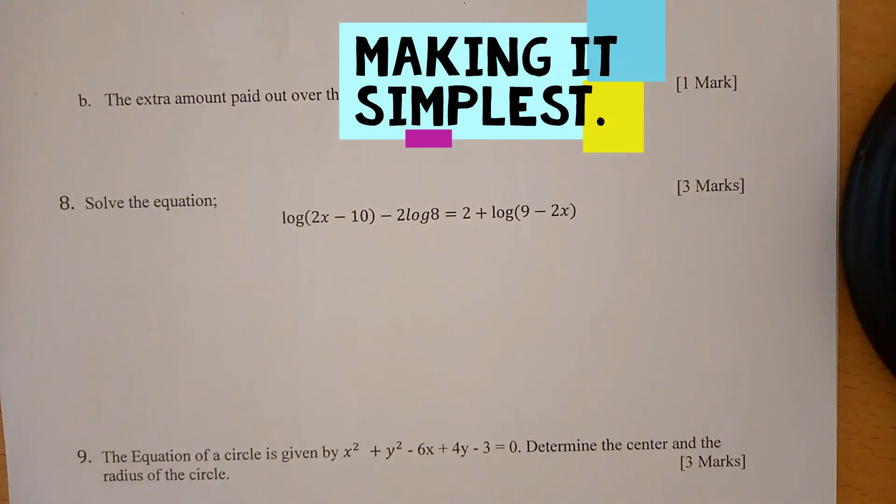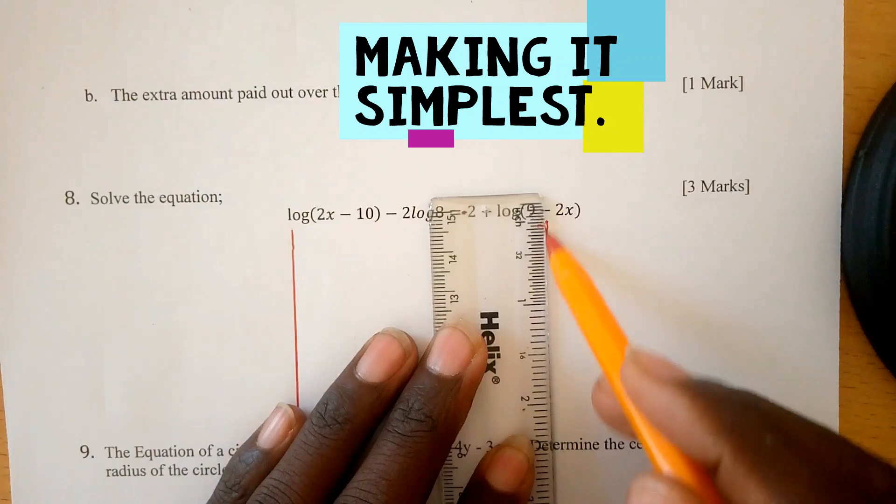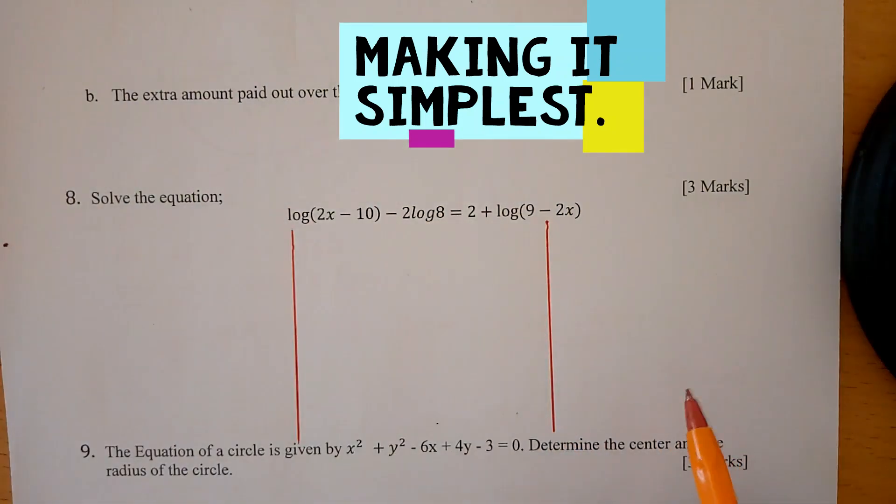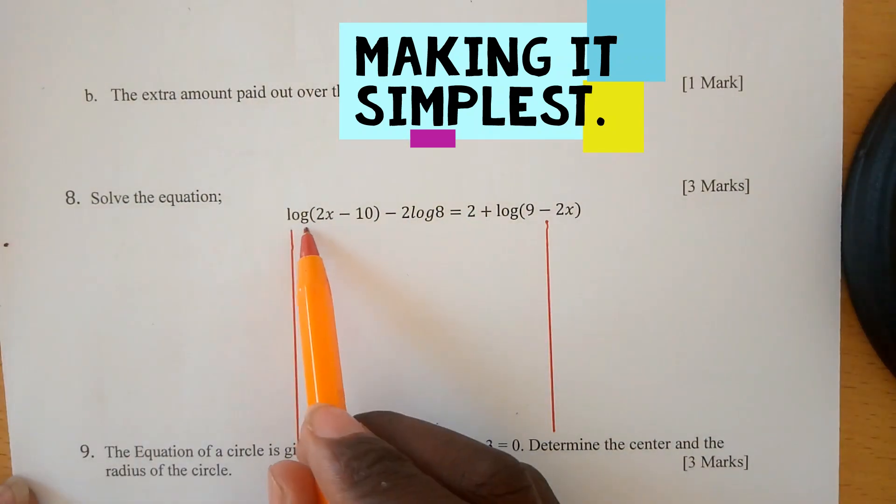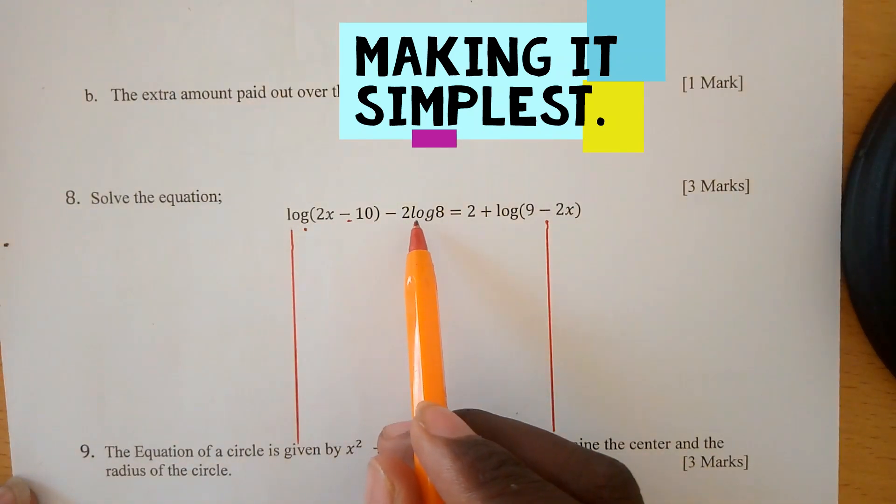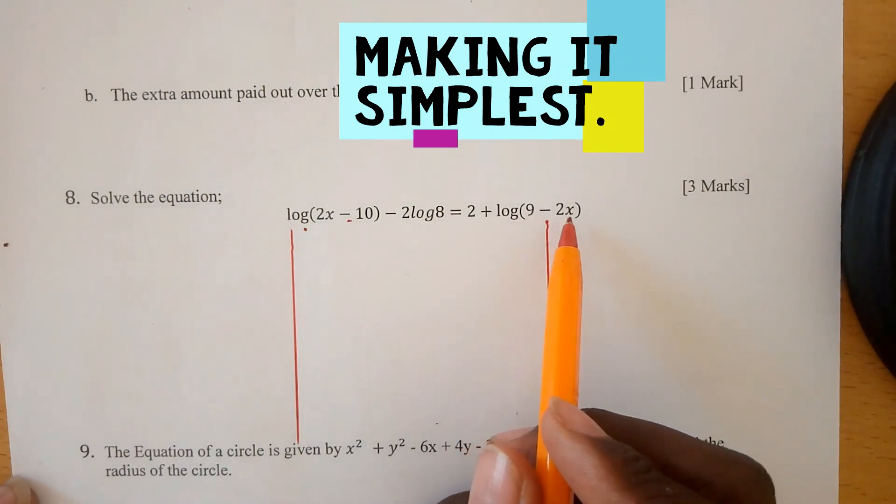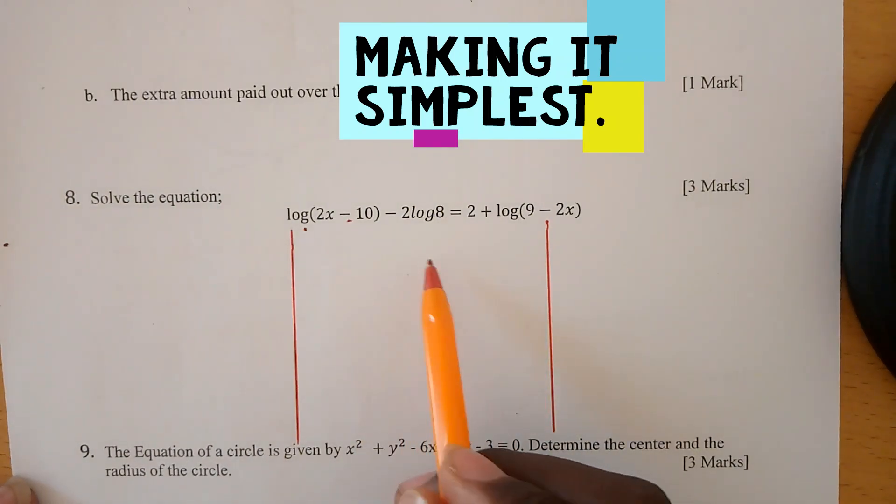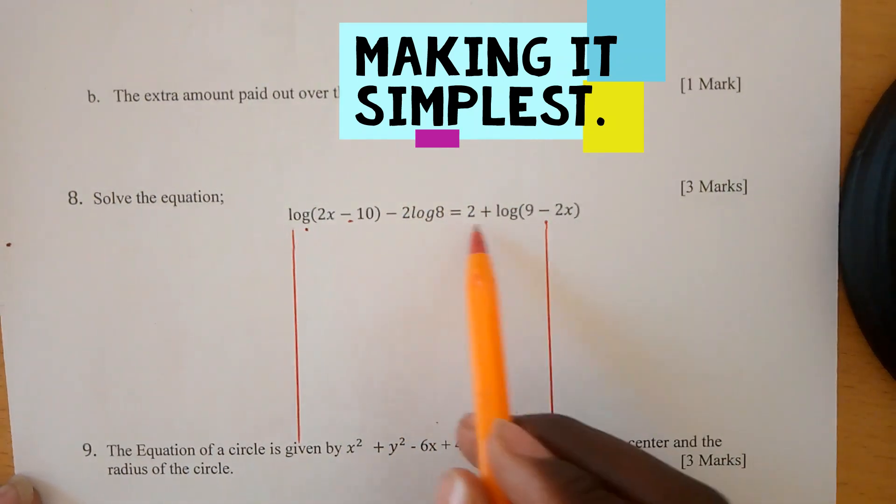Okay, we are going to solve this question involving logarithms. The equation is log(2x - 10) - 2log(8) = 2 + log(9 - 2x). You realize that all these have logs except the 2 which is here.